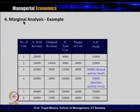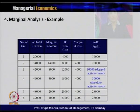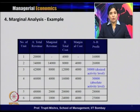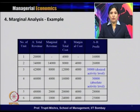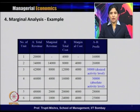We will take an example using a hypothetical table. There are 6 units of output. The second column gives total revenue, the third gives marginal revenue, the fourth gives total cost, the fifth gives marginal cost, and the last column gives profit — total profit equals total revenue minus total cost. At one unit of output, total revenue is 20,000 and total cost is 4,000, giving profit of 16,000. Since there is only one unit, there is no marginal revenue associated with it.